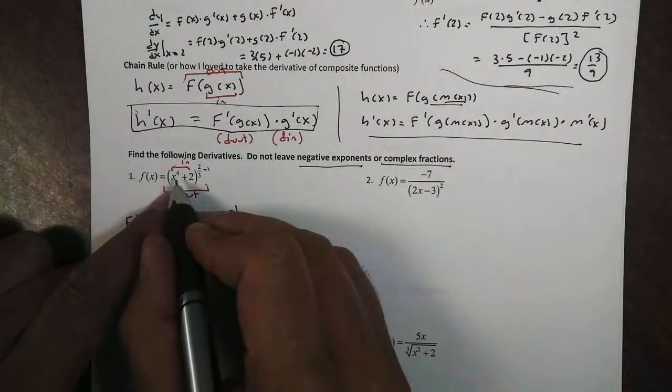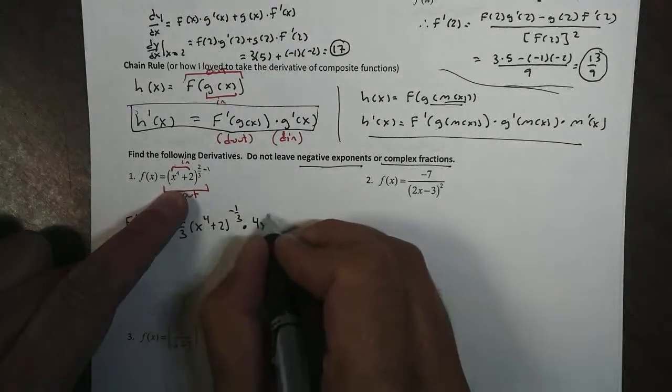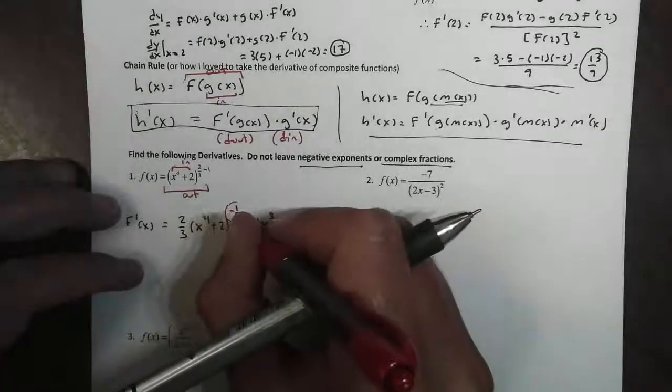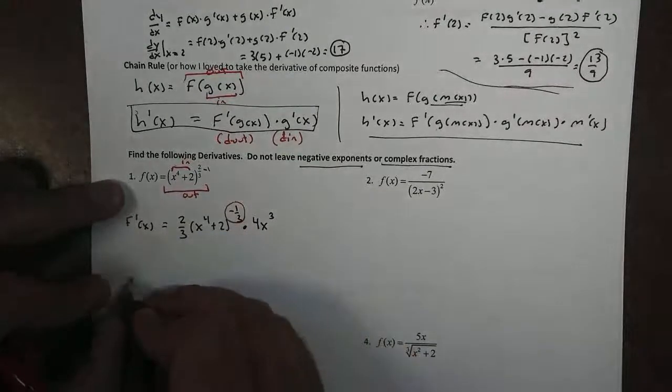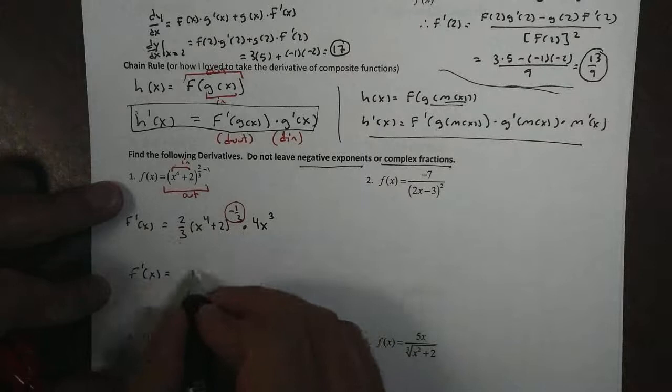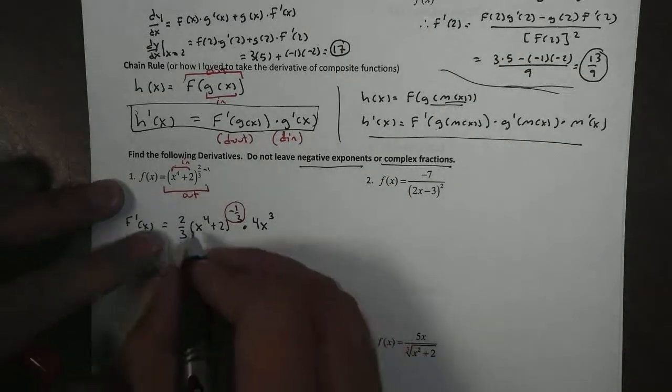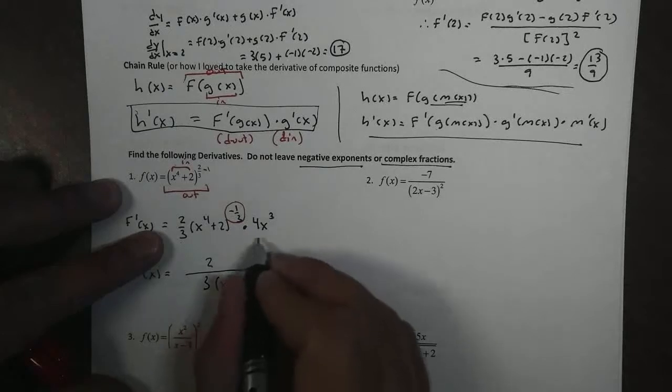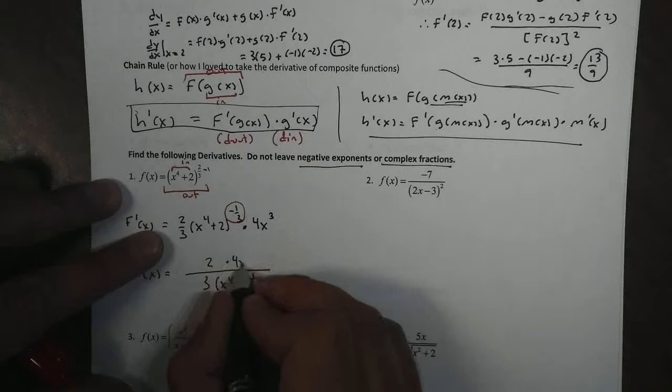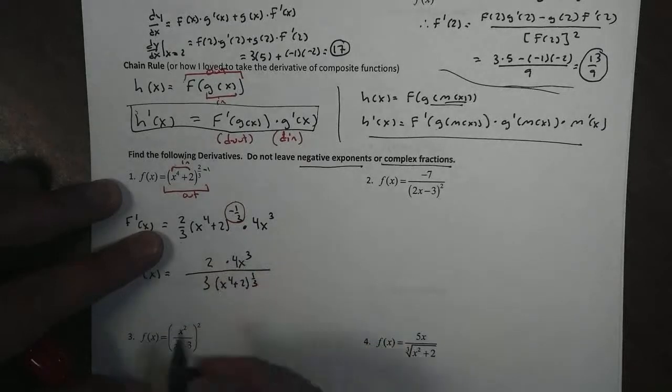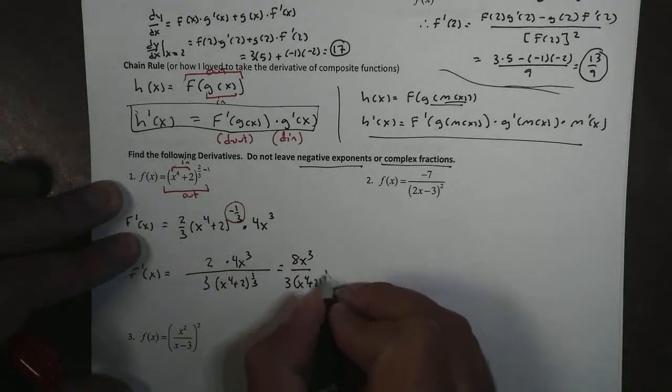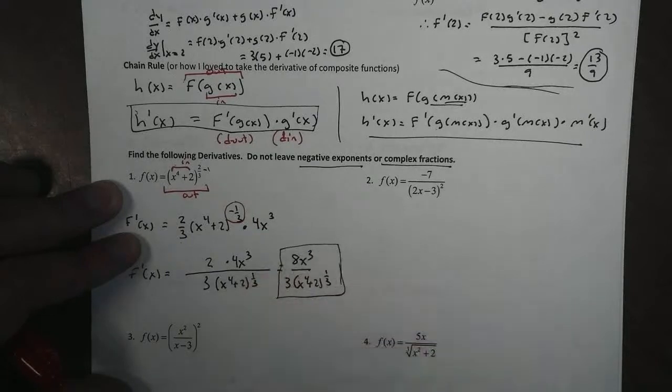But multiply that by the derivative of my inside function. Well, the inside function is this x to the fourth plus 2. Its derivative is just 4x cubed. Now this is my derivative, but remember, no negative exponents, so I have to get rid of that, which means it goes on bottom. So I like to play a game, what goes on top, what goes on bottom. Because this is one long product, I can run just a gigantic fraction bar. The 2 is on top, the 3 is on bottom. The (x^4 + 2)^(1/3), that has to go on bottom. And what about the 4x cubed? It stays on top. And there's your answer. Now, of course, you can simplify that to 8x³ over 3(x^4 + 2)^(1/3). And there's your derivative.